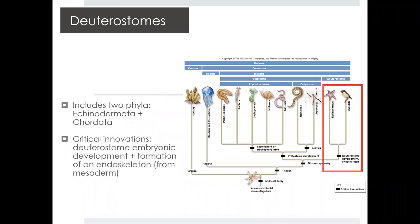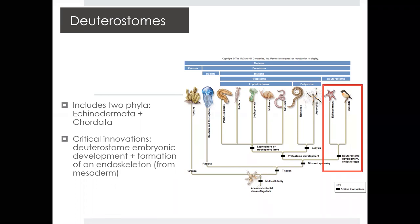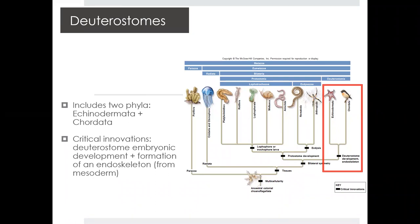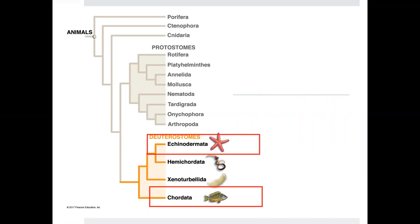Last week we talked about protostomes — sponges, jellyfish, and all our different types of worms and annelids. But this week we're going to focus specifically on the deuterostomes. Deuterostomes consist of two phyla: Echinodermata and Chordata. What's important about deuterostomes comes down to the critical innovations they exhibit. A lot of what you think of as vertebrates — fish, lizards, mammals — fall within Chordata. There are four phyla total, but we're mainly going to focus on these two.